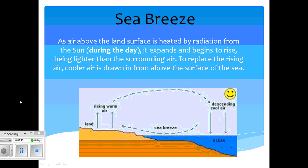Now, sea breezes can be described briefly by the image below. As air above the land surface is heated by radiation from the sun during the day, it expands and rises to become lighter than the surrounding air.